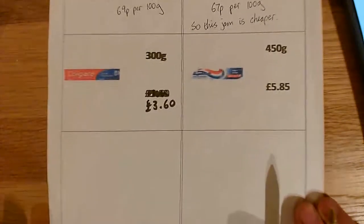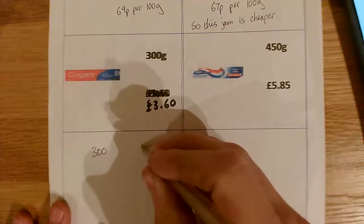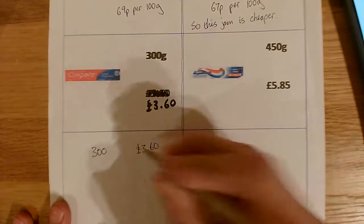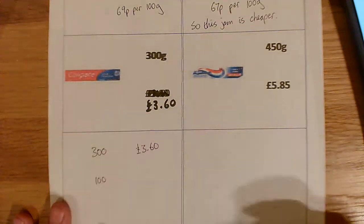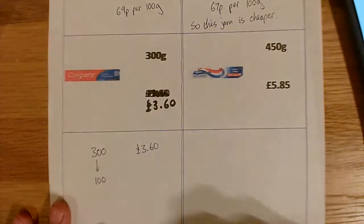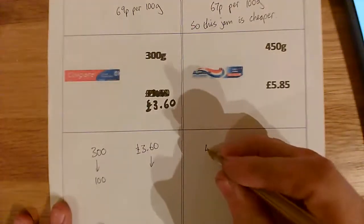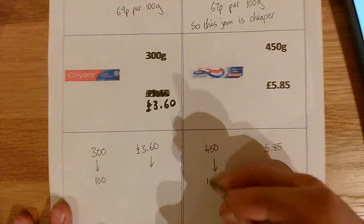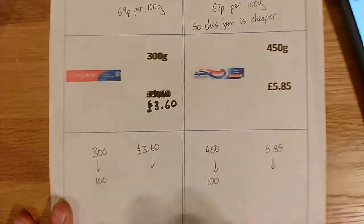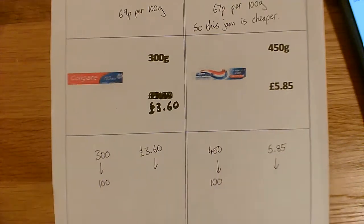Now we're going to do exactly the same with this second pair. Here we've got 300 grams for £3.60. We need to scale that down, and I want you to pause the video and have a go. Think: what are we going to divide by? And do the same to this one. Now this other item is a bit trickier — have a think. What are we going to divide by here? Pause the video, have a go, and then I'll run through the answer in just a moment.